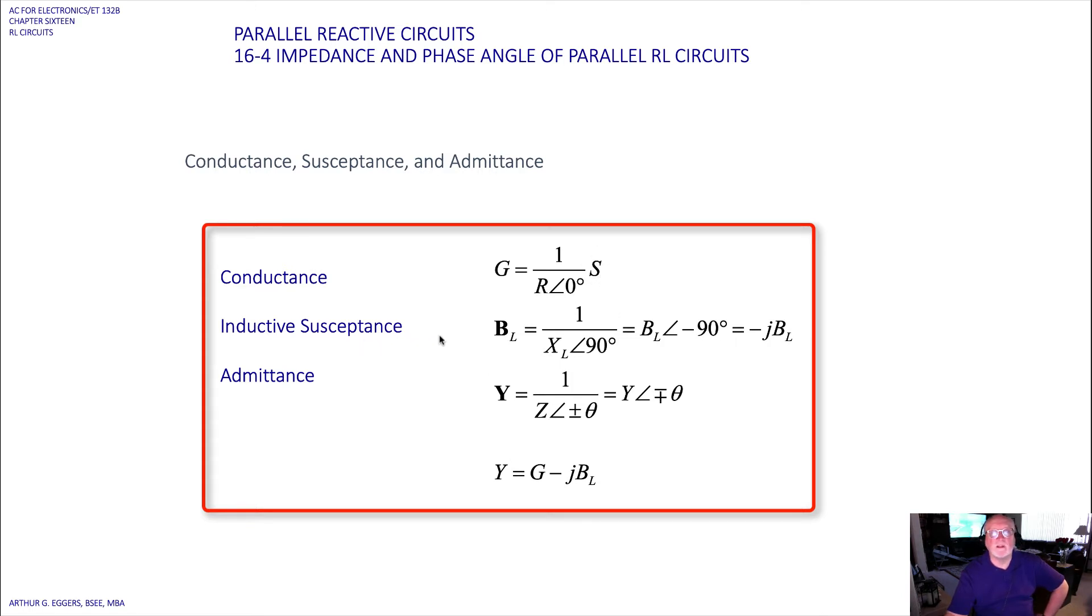For inductive susceptance we can see that we have one over the reactance X sub L at 90 degrees, which gives us a term we call B sub L, the susceptance at minus 90 because we move the angle into the numerator. So we have minus jB_L, the susceptance. For the admittance we use the value Y.